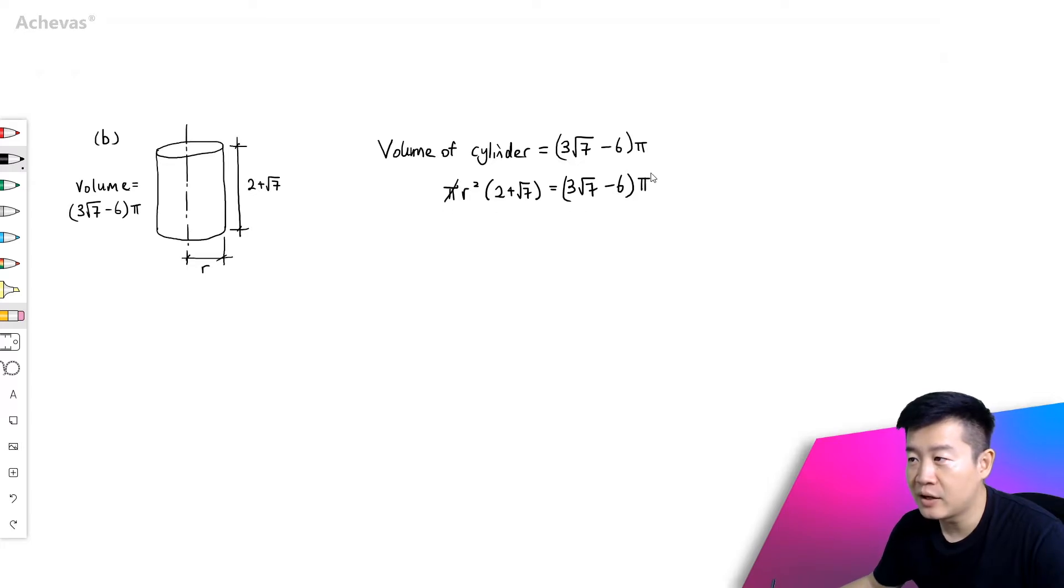And the π on the left and right hand side can be cancelled, which means that if I were to make r² the subject, r² is equal to (3√7 - 6) divided by (2 + √7).